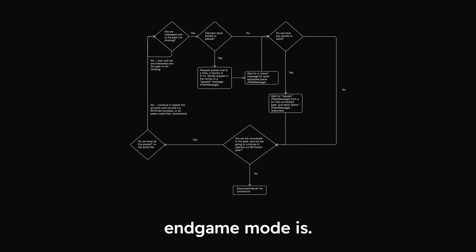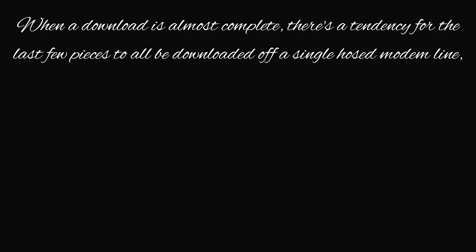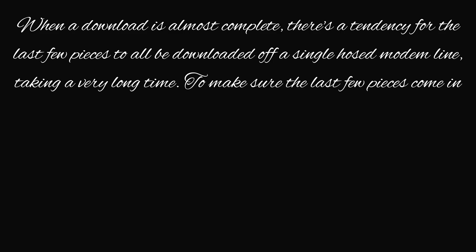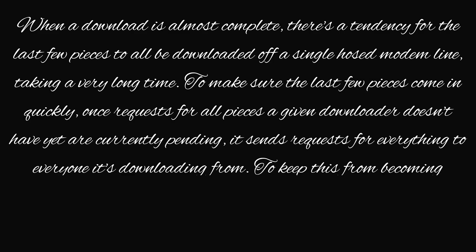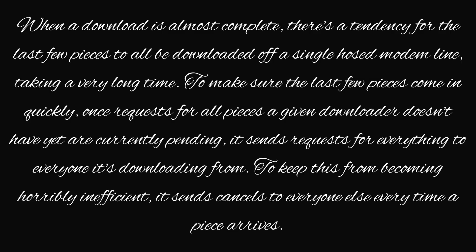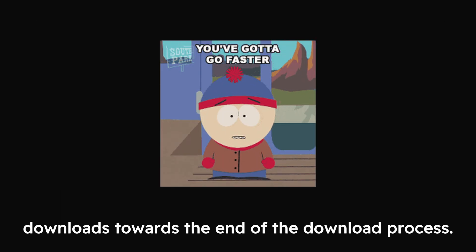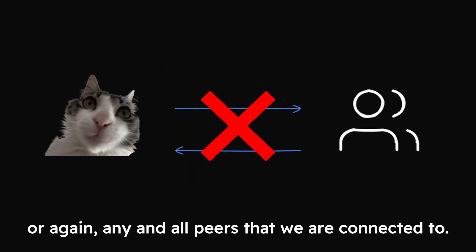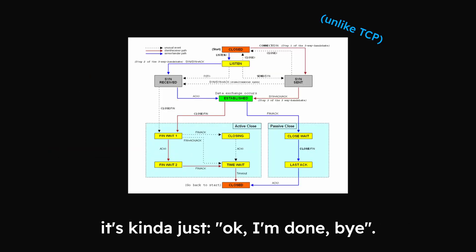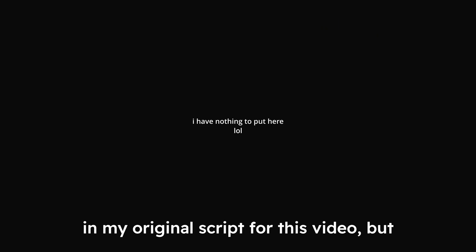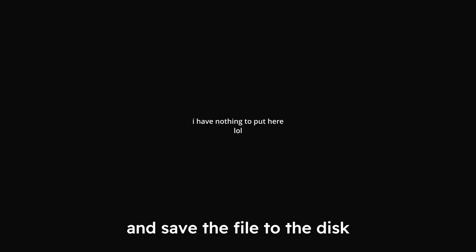Now would be a great time to mention what endgame mode is. When a download is almost complete, there's a tendency for the last few pieces to all be downloaded off a single slow line, taking a very long time. To make sure the last few pieces come in quickly, once requests for all pieces a given downloader doesn't have yet are currently pending, it sends requests for everything to everyone it's downloading from. To keep this from becoming horribly inefficient, it sends cancels to everyone else every time a piece arrives. In other words, cancel can be used to speed up downloads towards the end of the download process. When we're all done, we sever the connection to the peer. Once we're done downloading pieces, we collect them all, assemble them, and save the file to disk.